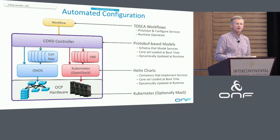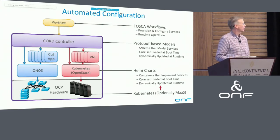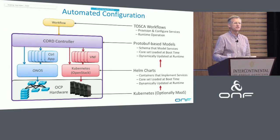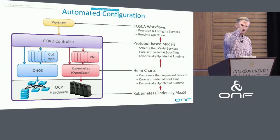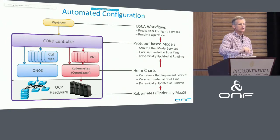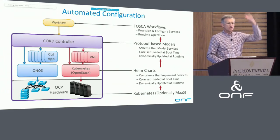What I've just described is a layered configuration system. I start by booting the bare metal, get Kubernetes running on it, then load Helm charts — the first one loads XOS, which understands how to interpret the models. As soon as I've got that loaded, I can load all the other models in, and once those are loaded I can start loading Tosca. I'm really building a bottom-up layered system with configurations coming in at each of these stages, and I can change those configurations at runtime.